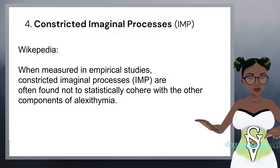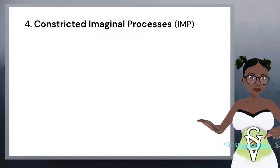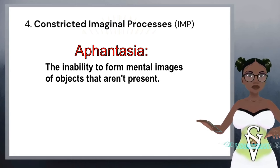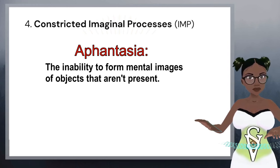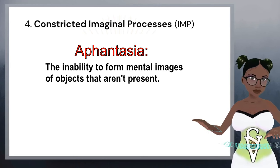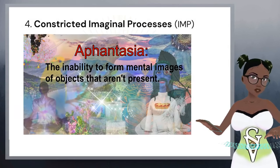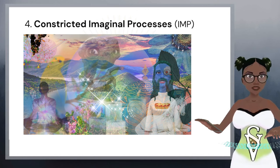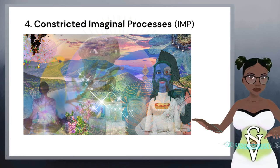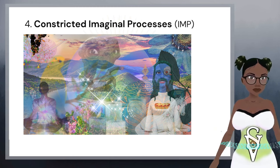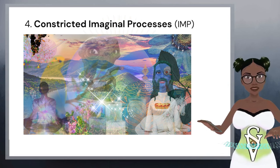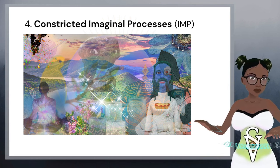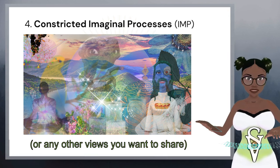I've heard some people with SPD say they experience aphantasia, which is the inability to form mental images of objects that aren't present. For these people, they don't experience the maladaptive daydreaming that some other schizoids engage in, and they're not likely to do a lot of fantasizing. I find it interesting that some schizoids have a lot of imagination and fantasies while others don't — I'm someone with quite a lively imagination myself. I'm really interested in hearing more from other schizoids about whether they have an active imagination, so if any schizoids watching this want to contribute their view in the comments, you're welcome to do so.